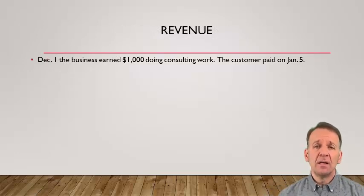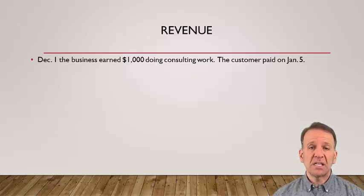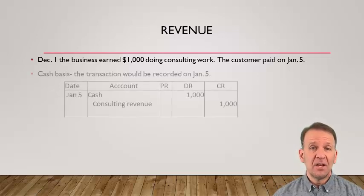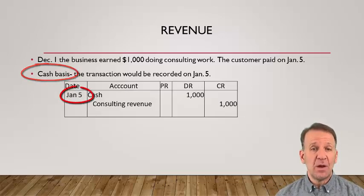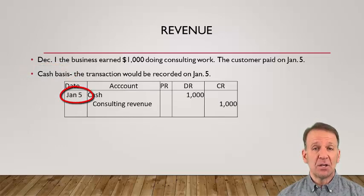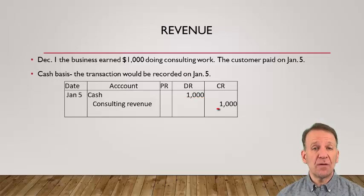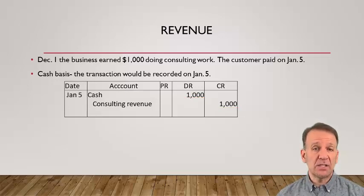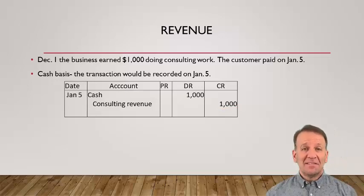Let's look at a revenue transaction. On December 1st, the business earned $1,000 doing consulting work. The customer paid the business on January 5th. Using cash basis accounting, we record the transaction on January 5th when we received the cash. We would debit cash $1,000 and credit consulting revenue $1,000. Cash is an asset and increases with the debit. Consulting revenue is a revenue account and increases with a credit.